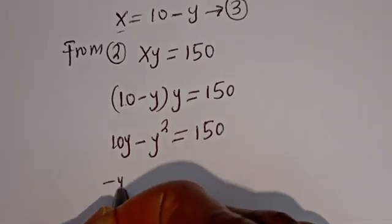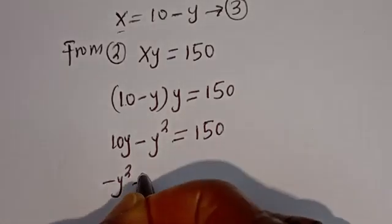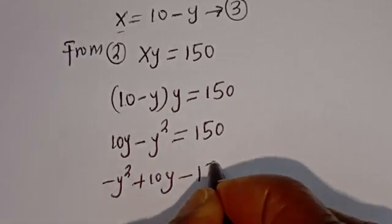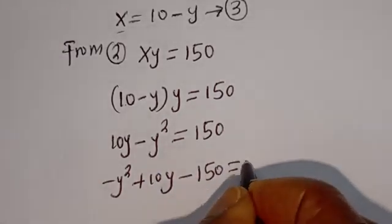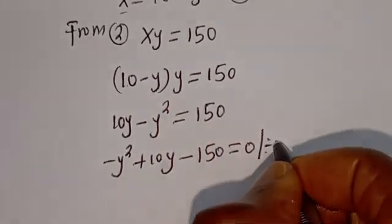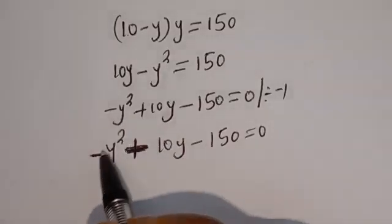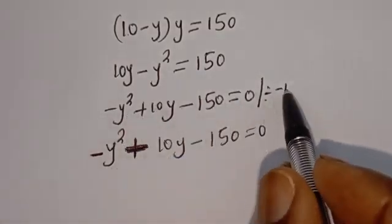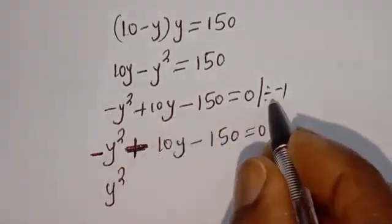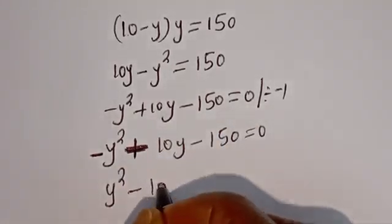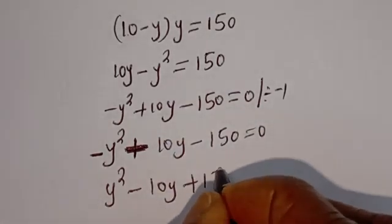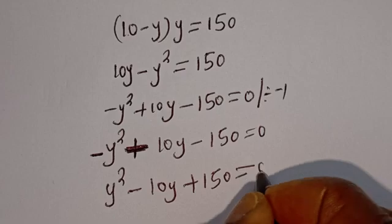Now we have minus Y squared plus 10Y. If you bring 150 to this side it becomes minus 150, equal to 0. Then let's divide all through by minus 1. Dividing gives us Y squared minus 10Y plus 150 is equal to 0.